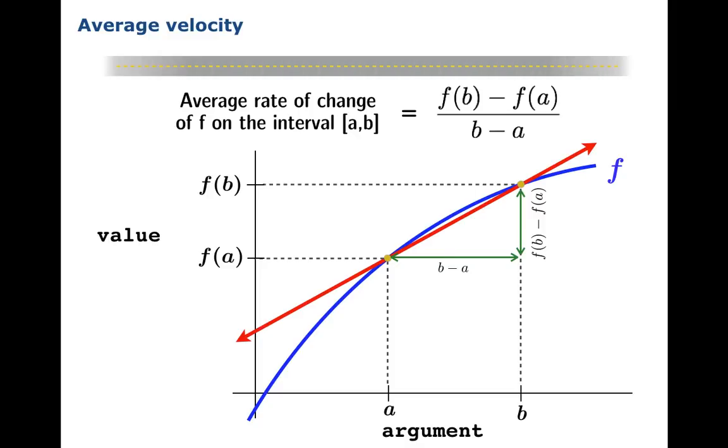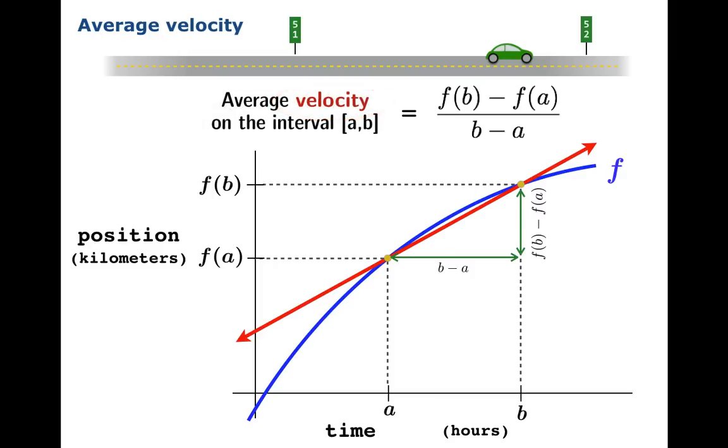Now we'll look at a special case. Suppose you had a long straight road with position markers, and a car traveling down the road, and you're measuring the position of the car as a function of time. You'd have units of distance and time—suppose kilometers and hours. In this setting, average rate of change is known as average velocity. Your units for average velocity would be kilometers per hour, which certainly sounds like a measure of velocity.